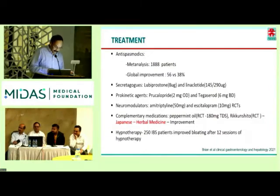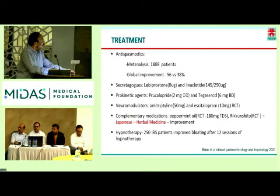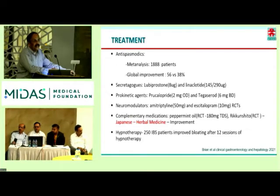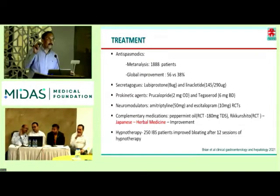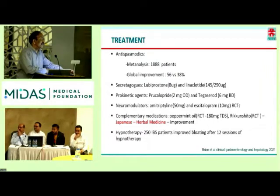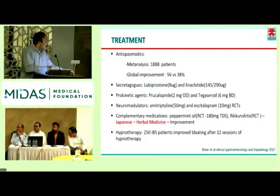For treatment: antispasmodics have been tried with global improvement of 46% vs 38%. Lubiprostone, linaclotide, prucalopride, and tegaserod are mainly for patients who have constipation. Neuromodulators — amitriptyline, acotiamide — where you feel that there is a phrenic viscero-sensory dyssynergia or increased visceral sensitivity, there is improvement with peppermint oil and some Japanese medications. Hypnotherapy is also used.